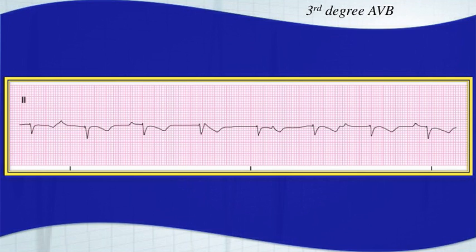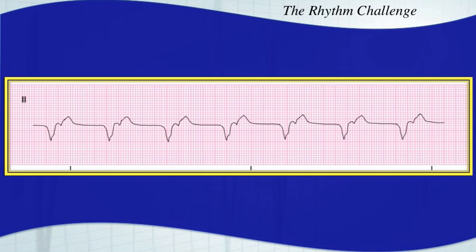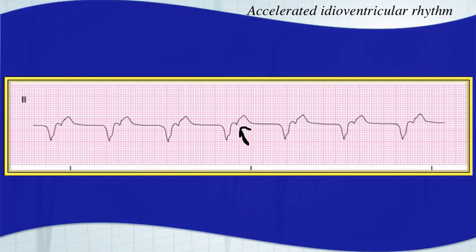Here's your next arrhythmia. Make sure you hit pause and try to interpret it. This is an accelerated idioventricular rhythm. Those are retrograde P waves, which can occur with ventricular rhythms. This fits the rate of about 60 beats per minute, which is an accelerated idioventricular rhythm. Very wide QRS complexes.